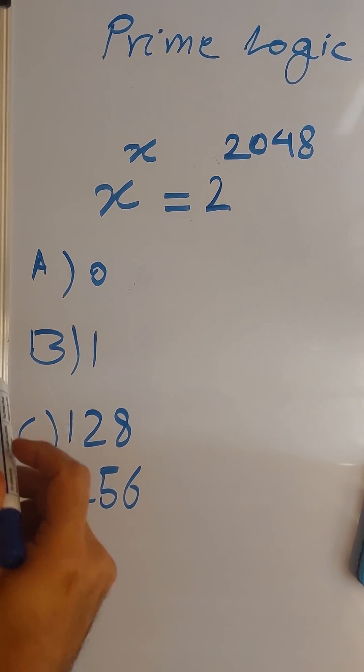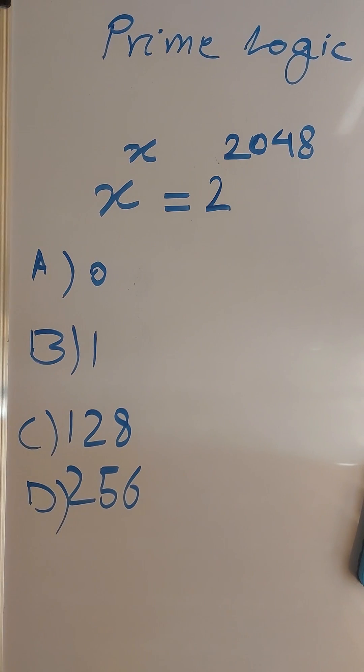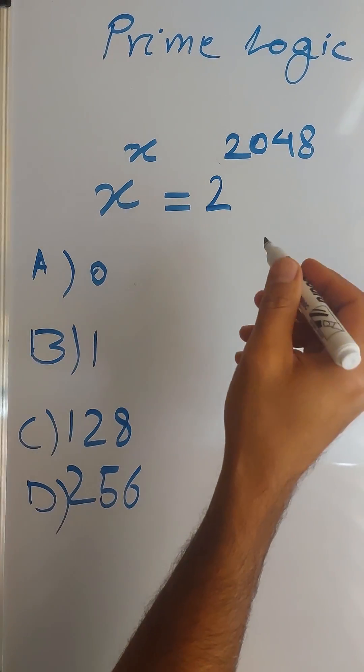Obviously you can't just say x equals 2 or 2048. We have 0, 1, 128, and 256 among our answers. So to break it down, we need to work out on the right side of this equation.